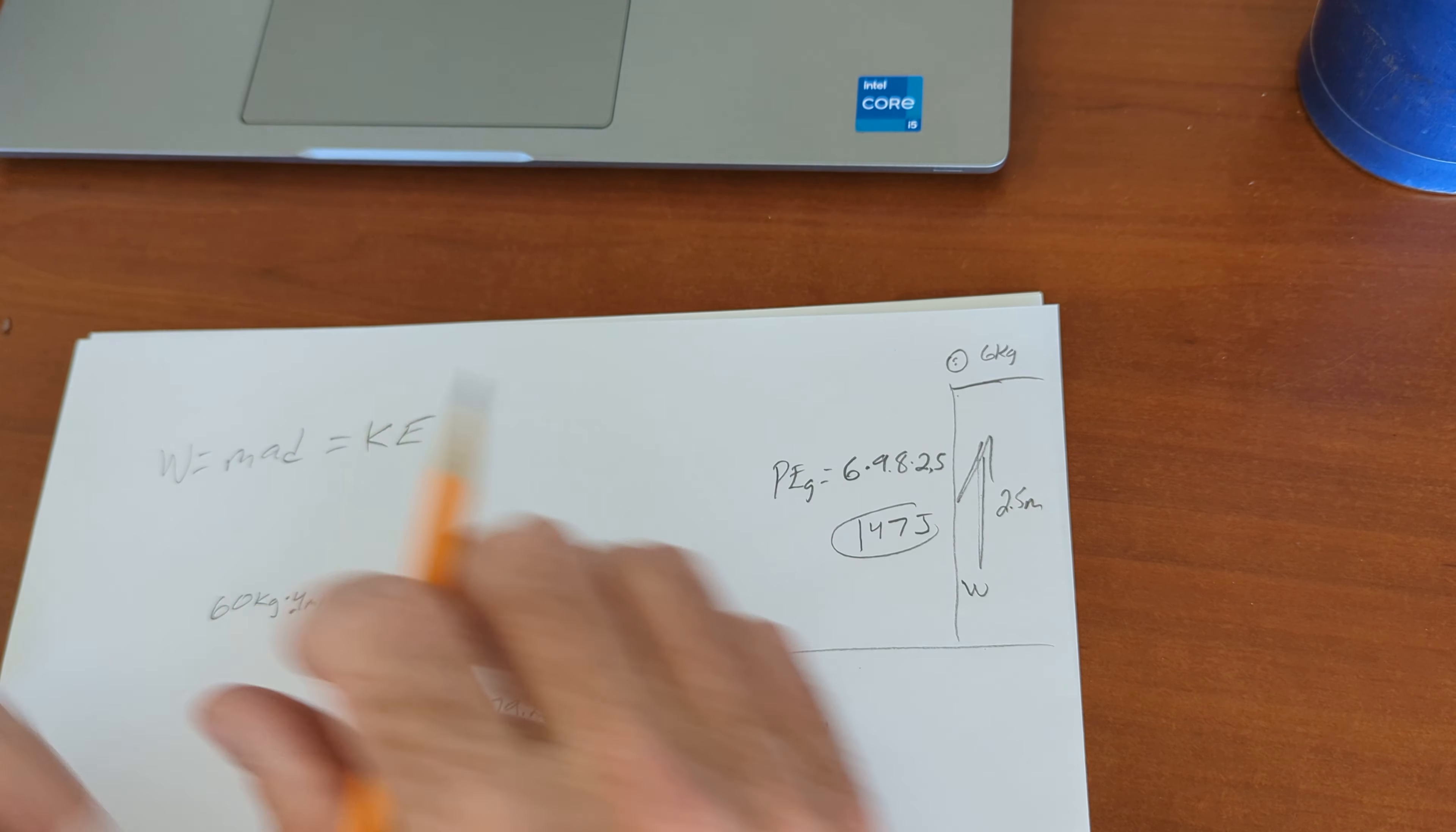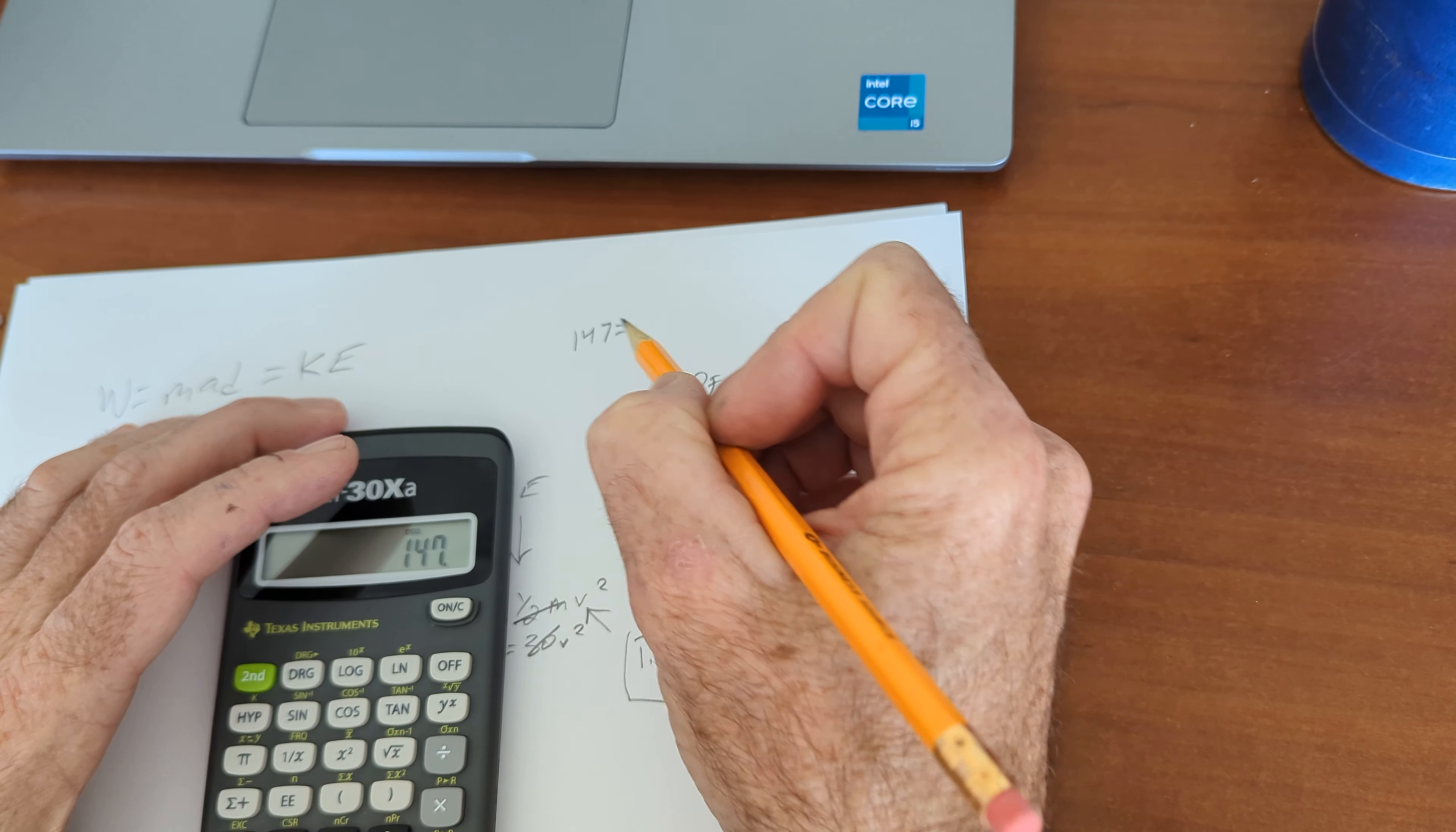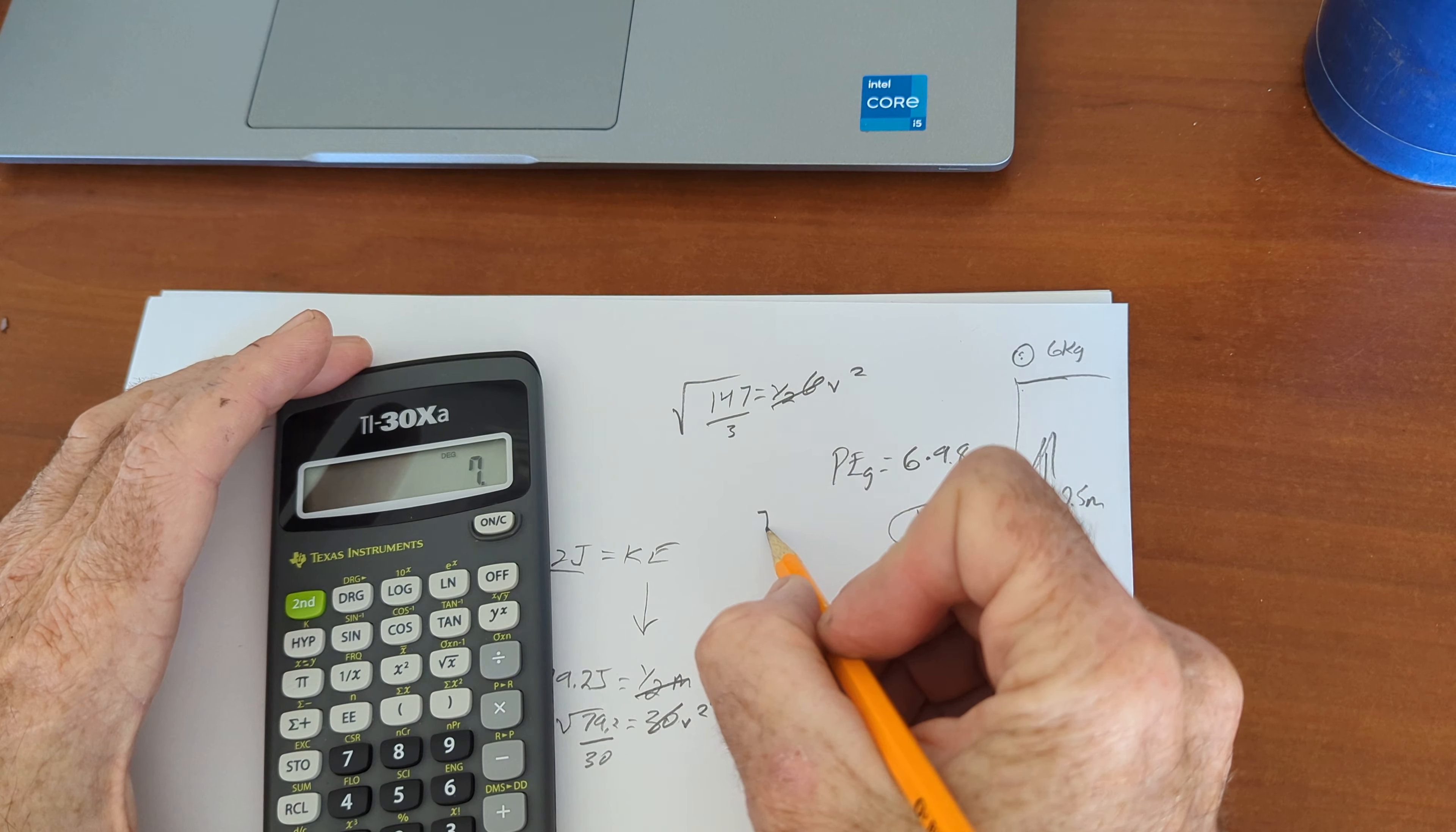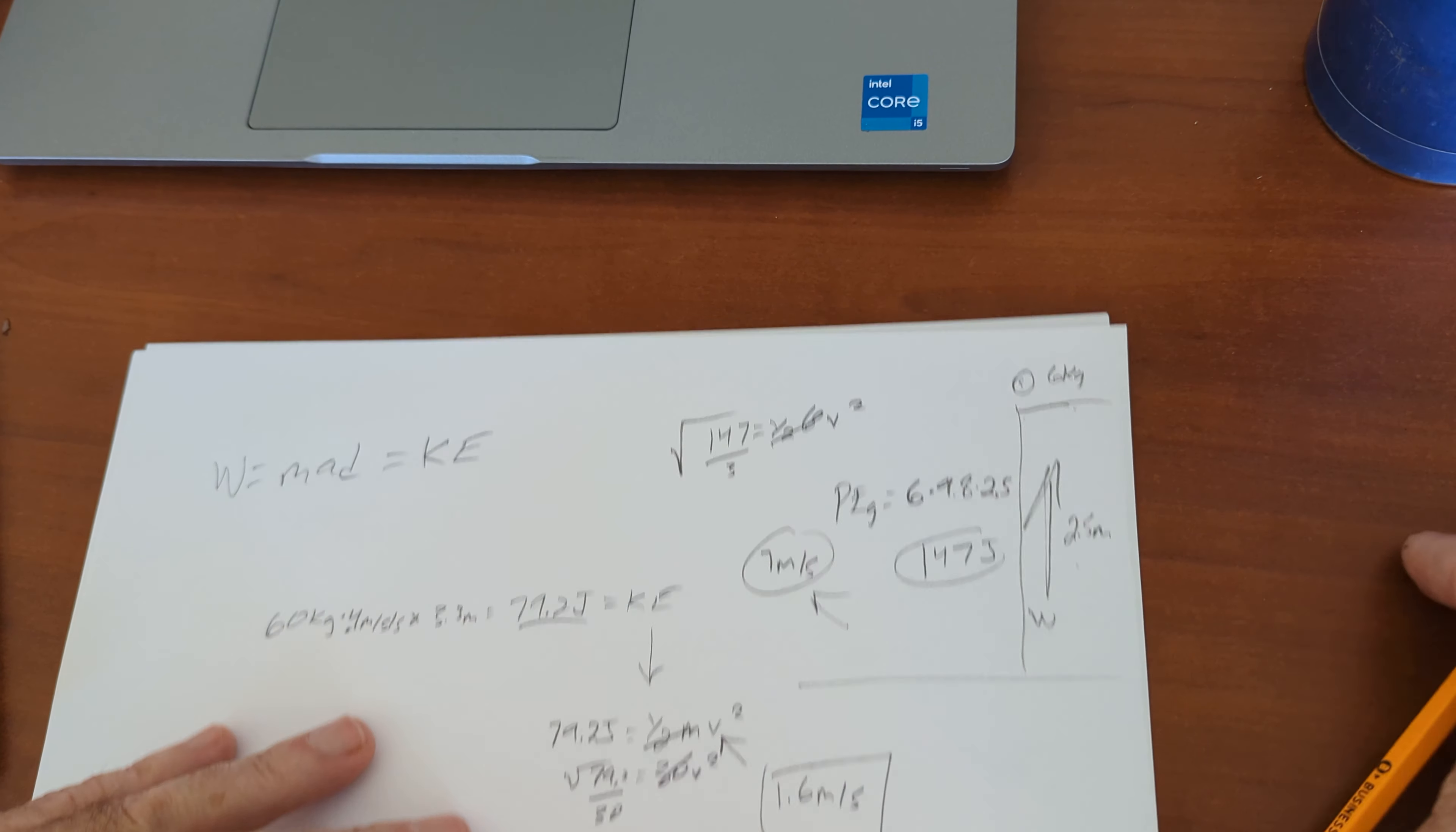What's the maximum speed the ball in number eight would have before it hit the ground? There's a bunch of ways to solve that. But you would just say 147 equals 1 half mv squared. 147 divided by 3 square root. Divided by 3 equals square root. 7 meters per second. So if you also solved how fast would something hit the ground if it fell from a height of 2.5 meters, you should get the same answer. If you don't, something's wrong.